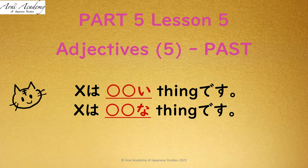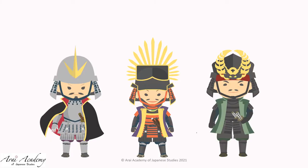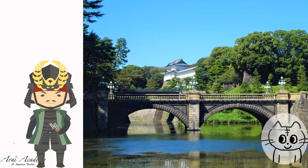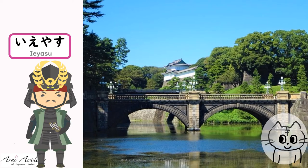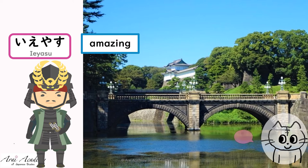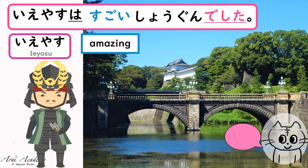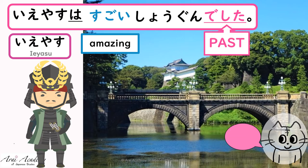Now, let's talk about a famous shogun in the past. Do you know how to say 'Ieyasu was an amazing shogun'? Try. Yes — Ieyasu wa sugoi shogun deshita. Deshita shows the past. Well done.